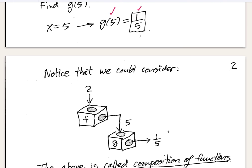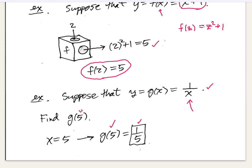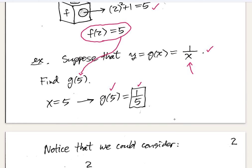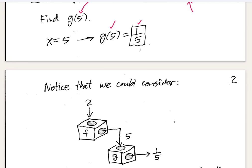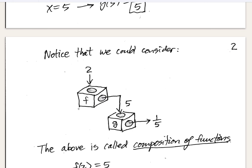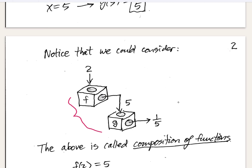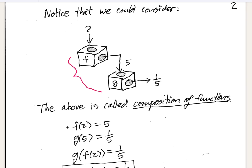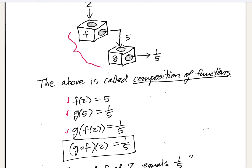Notice that 5 was the value that came out of f. So I could consider that final value 1/5 as a composition of functions. When 2 dropped into f, 5 popped out, and then 5 drops into g and 1/5 pops out. This is an example of connecting two function machines together — what we would call a composition of functions. So g of f of 2 is 1/5. This would be a true statement.